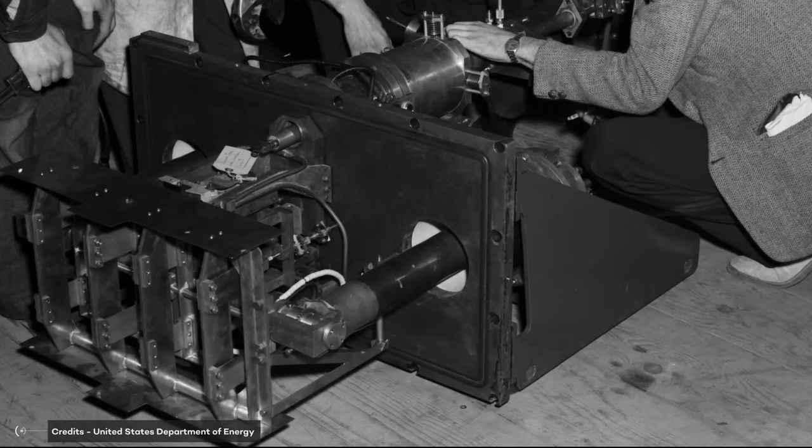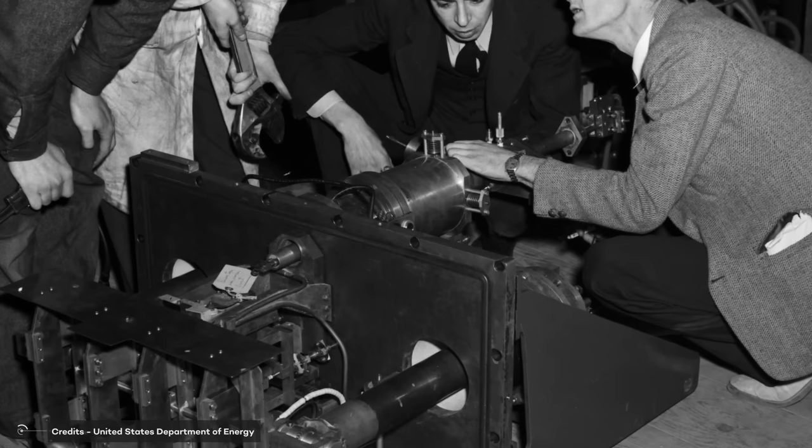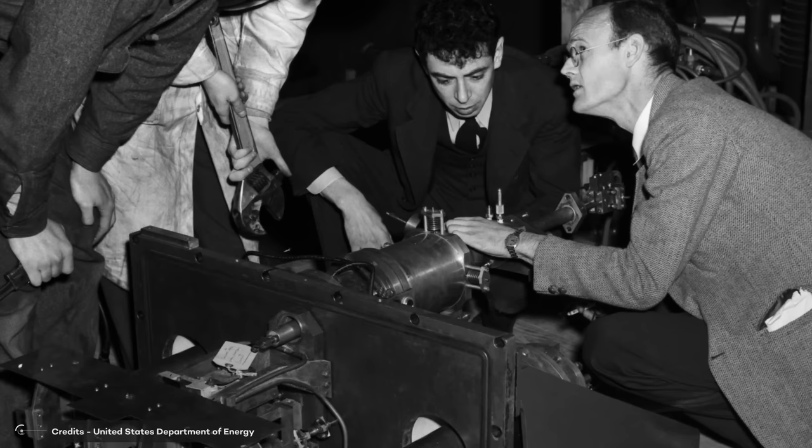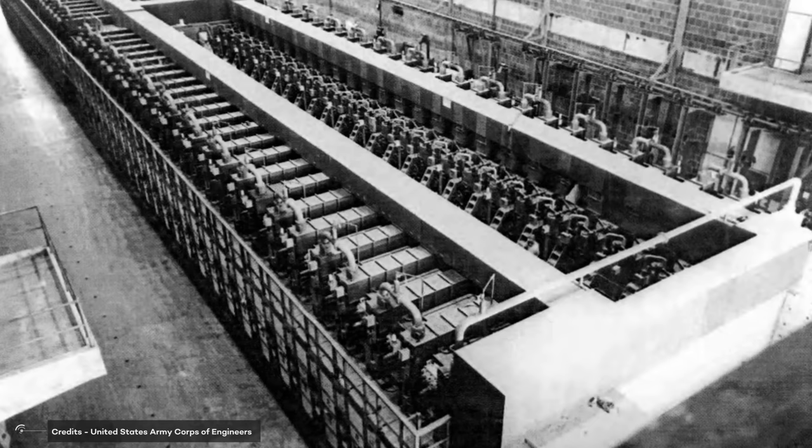During World War II, Calutrons were unsung heroes, tirelessly enriching uranium for the first atomic bombs. Without them, the bombs' power would have been insufficient for the devastating impact we witnessed. They paved the way for nuclear technology, revealing the incredible power and weighty responsibility that comes with unraveling the energy trapped within atoms. After the war, other methods of enrichment became more common, but calutrons were a crucial first step. They paved the way for nuclear technology and showed us both the incredible power and immense responsibility that comes with harnessing the energy inside atoms.